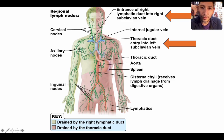For the lymphatic system, we have our left and right subclavian veins. The thoracic duct dumps into the left subclavian vein, and the lymphatic duct dumps into the right subclavian vein. These two orange arrows show it clearly, and it's also labeled down here for you.